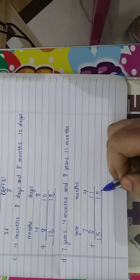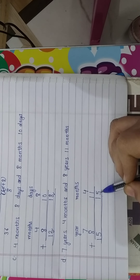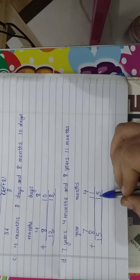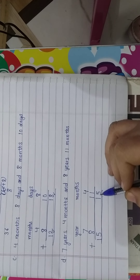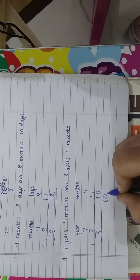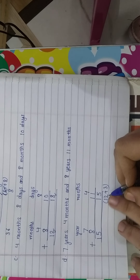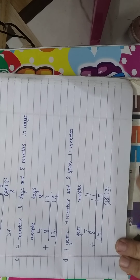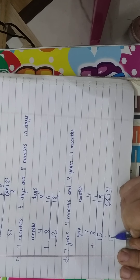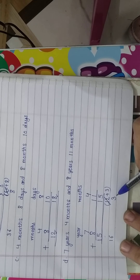Here 15 months are coming, but according to our calendar we have only 12 months in a year. So we will transfer 12 months to the left — 12 months equals 1 year. Break 15 as 12 plus 3. Transfer this 12 months, cut it from here, add 1 year to the left: 15 plus 1 is 16. How many months are left? 3 months. So the answer is 16 years and 3 months.